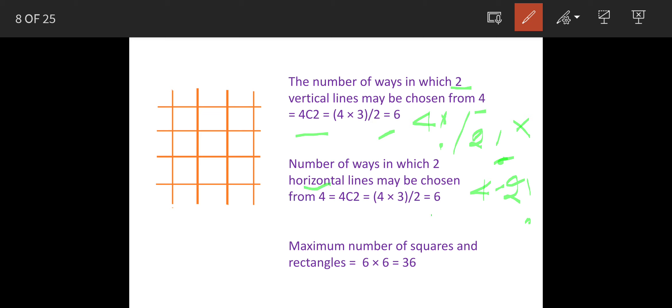Similarly for horizontal lines they can be chosen in 6 different ways. So maximum number of squares and rectangles will be 6 into 6, which equals 36.